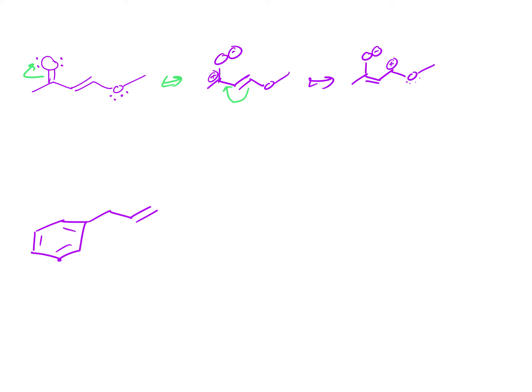And I'm going to draw the lone pairs on this oxygen here, because that gives us our final pattern of lone pair adjacent to cation. And I can draw that. And now there's a plus charge on the oxygen. And you'll notice we still have zero total charge. We started with zero. We created a plus and a minus, and we kept that plus and a minus throughout our resonance patterns.